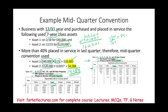So far we have covered the half-year convention and the mid-quarter convention — both of which apply to personal property, not real property. In the next session we will look at the mid-month convention, which applies to real property such as buildings and warehouses. Go to Farhat Lectures for additional resources, lectures, and multiple choice questions to help you understand cost recovery. Whether you are a CPA exam candidate, accounting student, or enrolled agent — invest in yourself. Good luck and study hard.